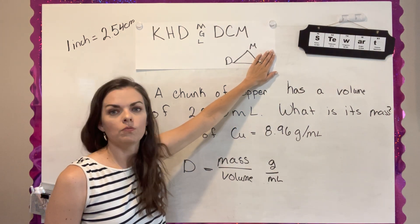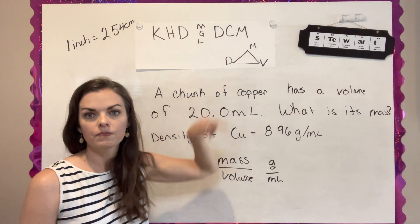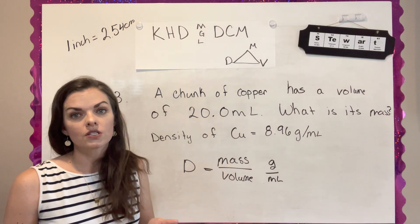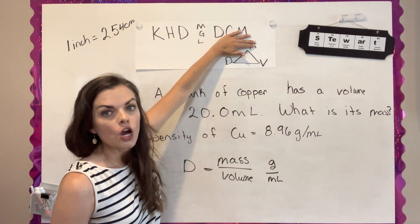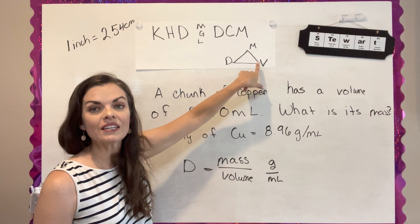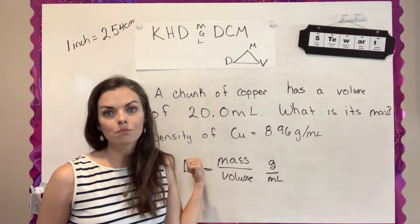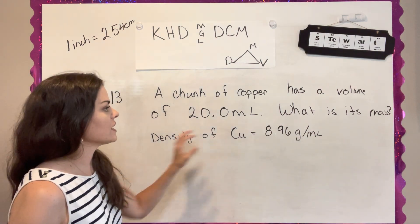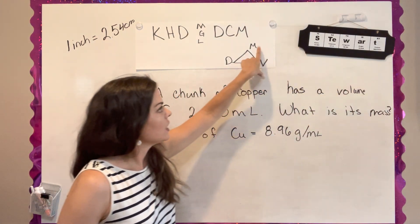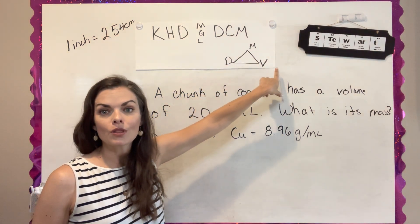But let's say they give me a problem and they're asking me for the volume. Well, I'm going to cover up the volume and that one would be the mass divided by the density. The other thing that these questions can ask you to solve for is mass. So if you cover up mass, you have density right next to volume. And so those are multiplied by each other. So let's apply this to question 13.